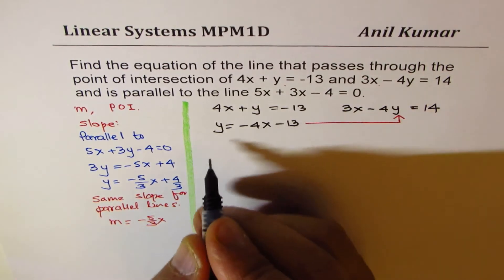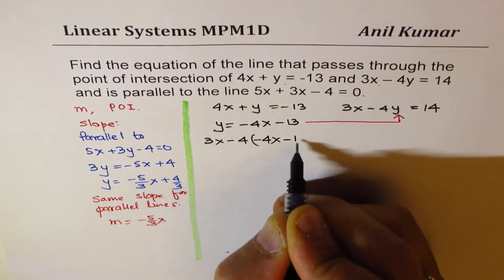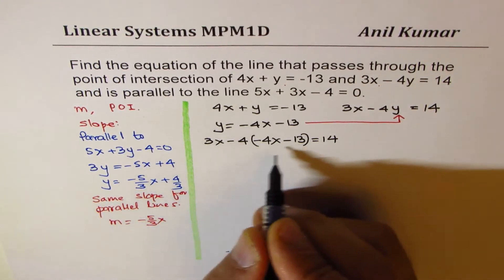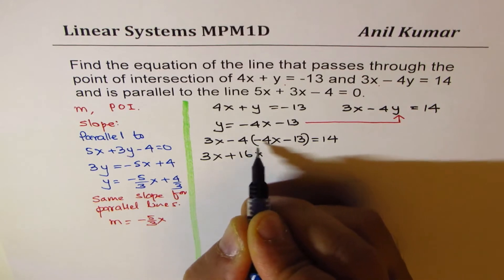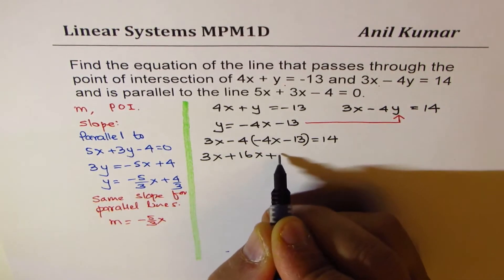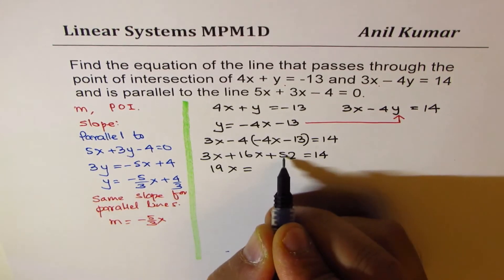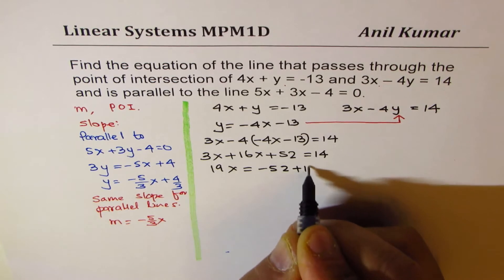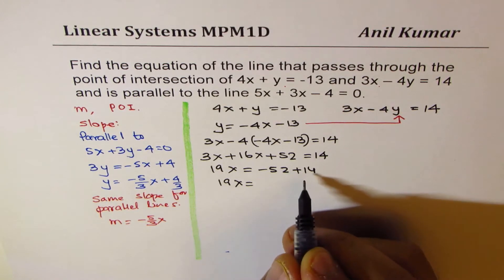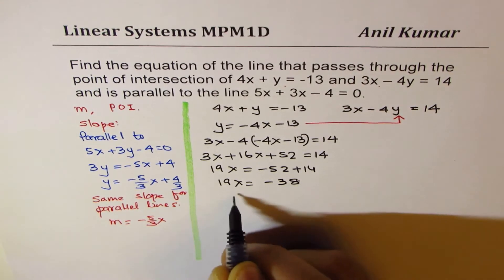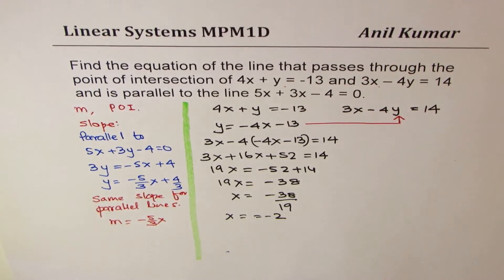We substitute this value of y into the second equation, giving us 3x - 4(-4x - 13) = 14. Expanding and simplifying: 3x + 16x + 52 = 14, so 19x = 14 - 52 = -38, and therefore x = -38/19, which gives x = -2.